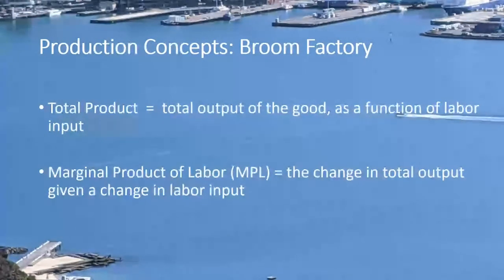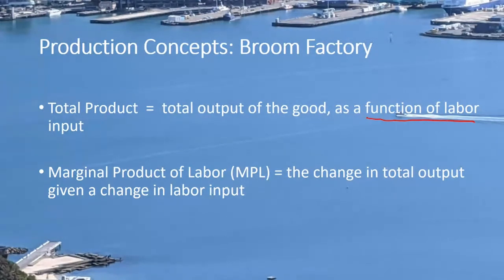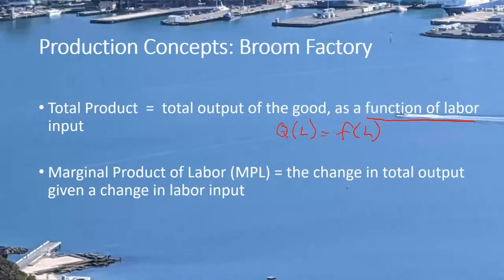Total product is the total output of the good. It is a function of — meaning it's dependent upon — the labor input into the production process. We could define a production function where Q, a function of L, is equal to F of L. It depends on the amount of labor that goes into the production process, and that's going to tell us how much quantity we can produce.